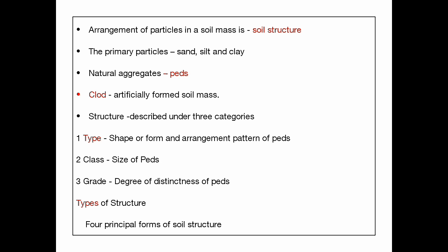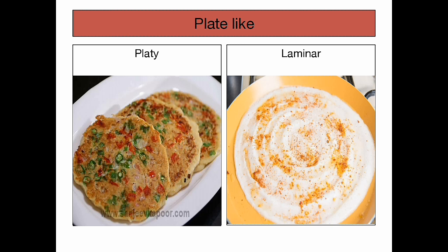The types of soil structure are of four kinds. The first is plate-like. In plate-like structure, the horizontal axis is larger than the vertical axis. The best example for it is chapati — in chapati, the horizontal axis is larger than the vertical, so chapati is the best example for plate-like structure.